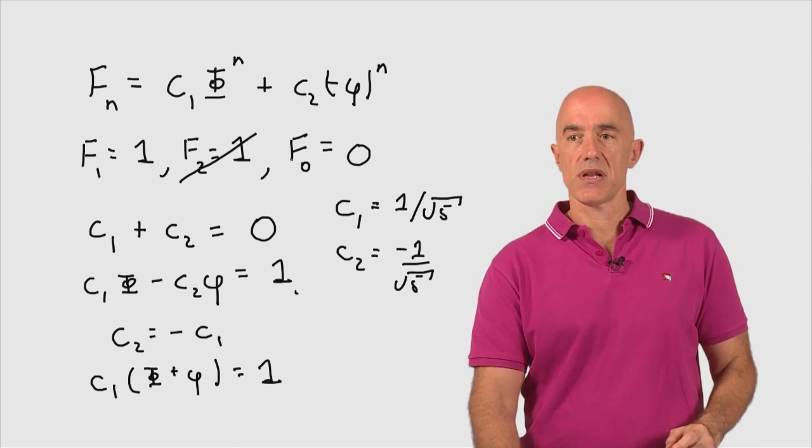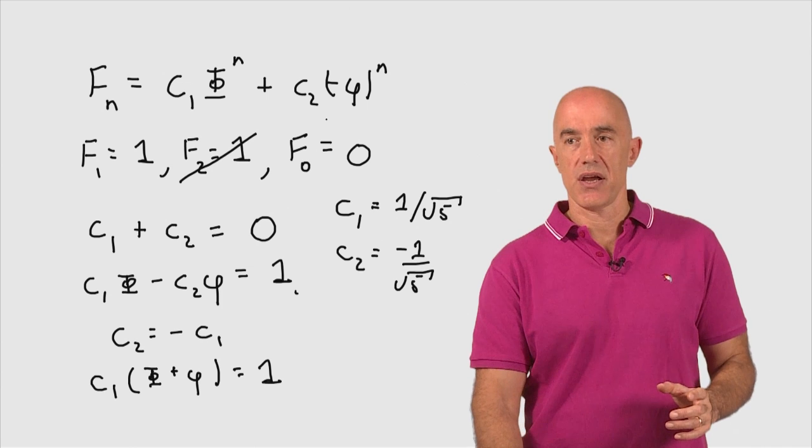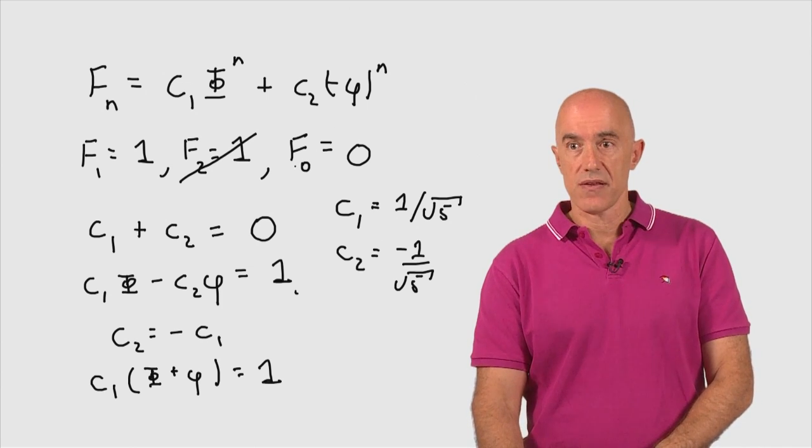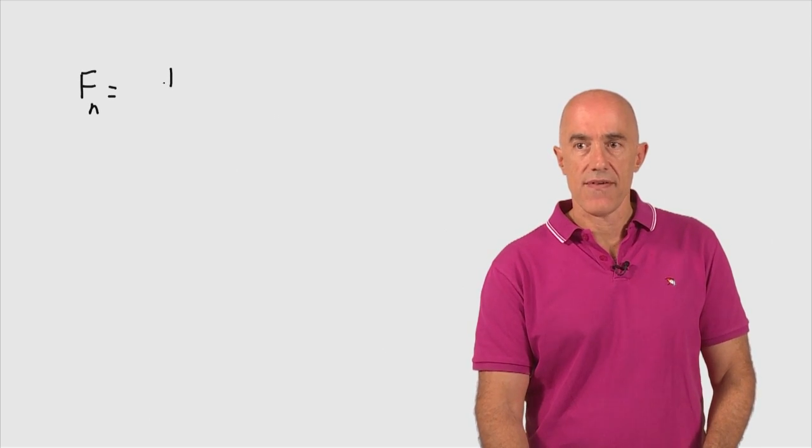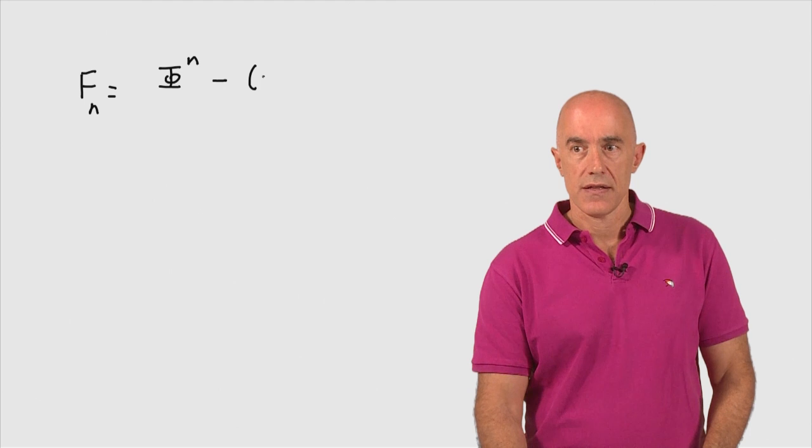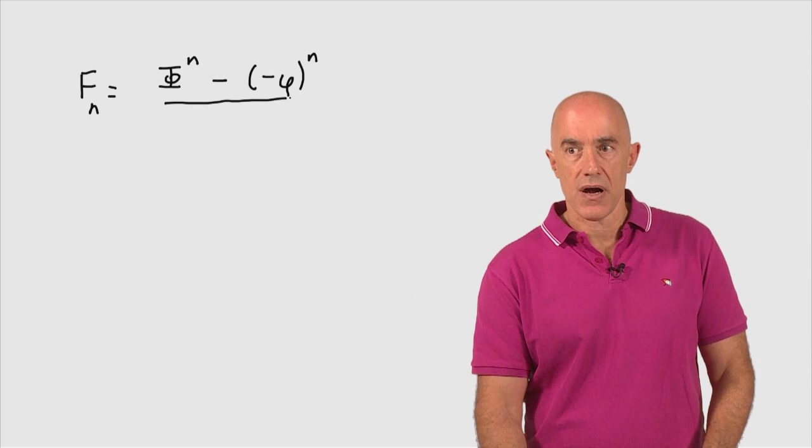So we can put it together. We get Binet's formula then is F_n equals phi to the nth power minus negative little phi to the nth power divided by square root of 5.